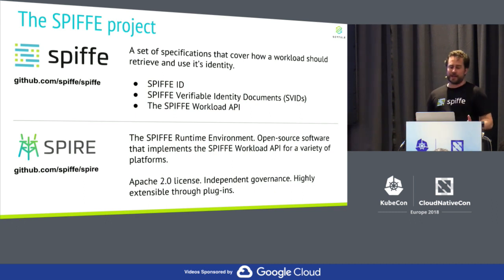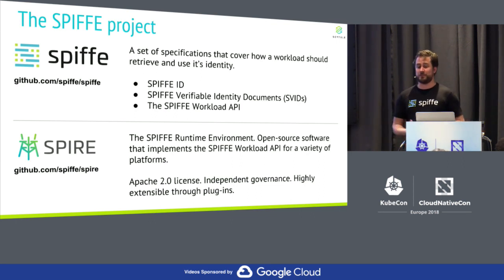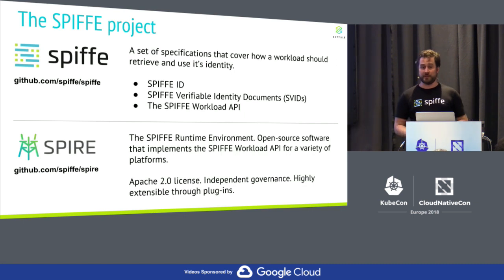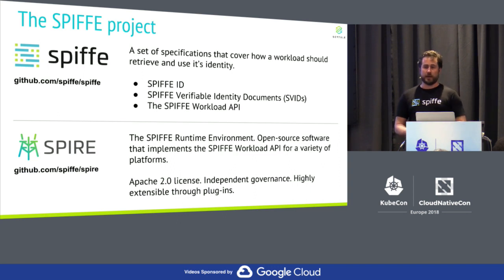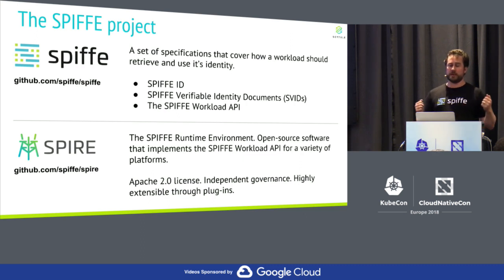When we talk about SPIFFE, we actually talk about two projects. SPIFFE itself refers to a specification — in particular, a specification for a workload API. The other project is SPIRE, the SPIFFE Runtime Environment, which is the software that actually implements that specification. Fairly early on, we recognized the benefits of separating these concerns — there may be multiple providers that implement the SPIFFE interface, potentially even cloud providers. We also have the ability to federate across and bridge trust between multiple different SPIFFE-compliant installations.